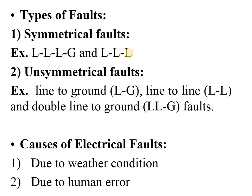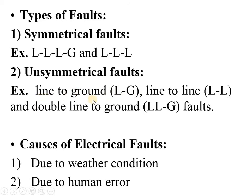Unsymmetrical faults include line-to-ground fault, line-to-line fault, and double line-to-ground fault. The majority of faults in the power system are unsymmetrical — about 85 to 90 percent. Among these, line-to-ground fault plays the most important role, accounting for about 80 to 85 percent of faults observed in the power system.